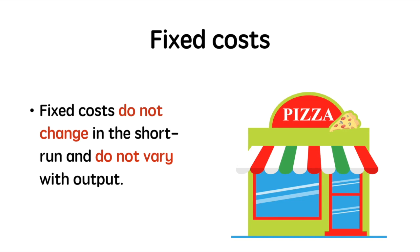Simply put, fixed costs are costs that do not change in the short run and do not vary with output. The image here is of a pizza restaurant. Assuming the pizza shop manager pays the same rent every month, the amount of pizzas produced doesn't really matter — if they produce nothing or a lot, the rent is the same. Other examples of fixed costs include monthly insurance payments and salary payments.